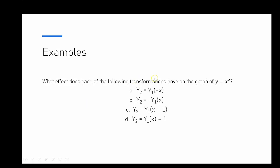The example we're going to look at here is what effect does each of the following transformations have on the graph of y equals x squared. We're going to go through each of these — some of them we're going to do in one go, and the others we're going to look at individually.